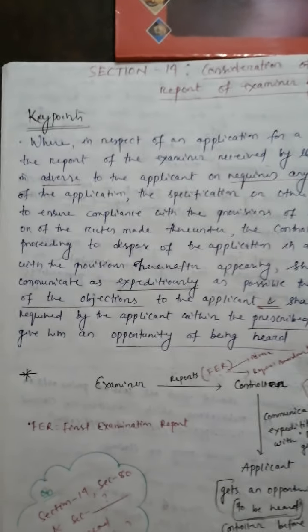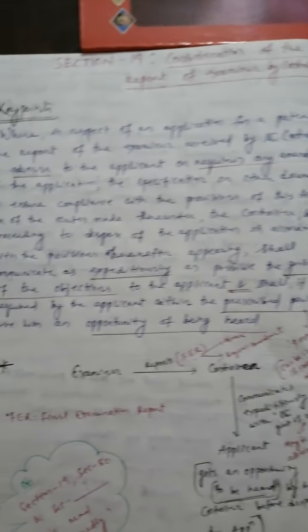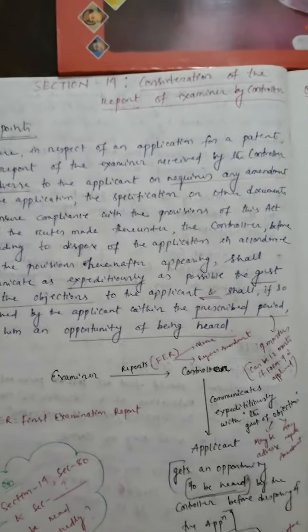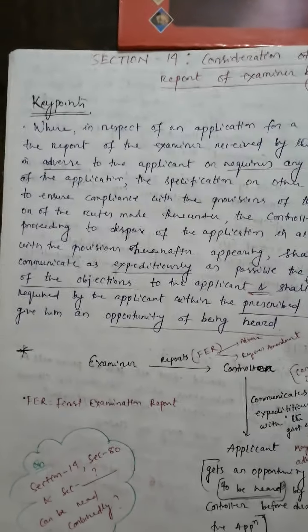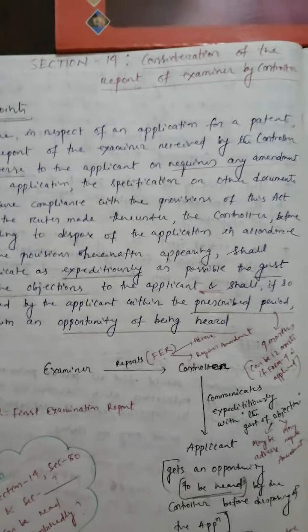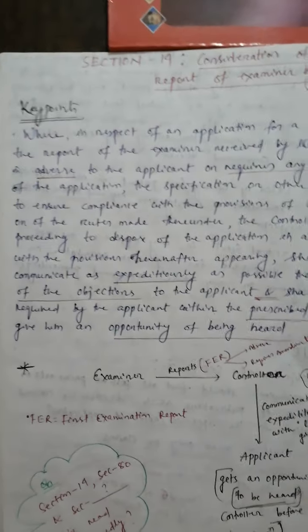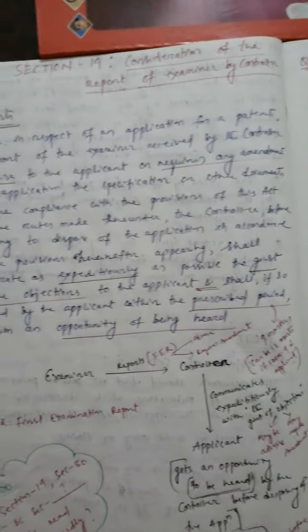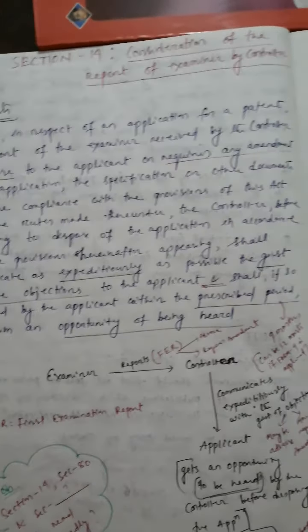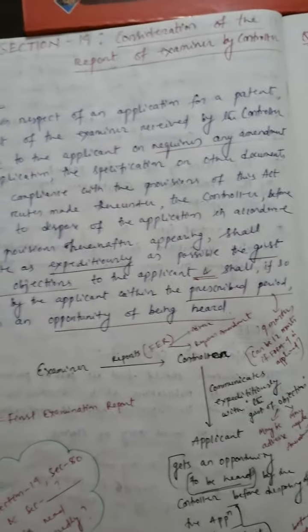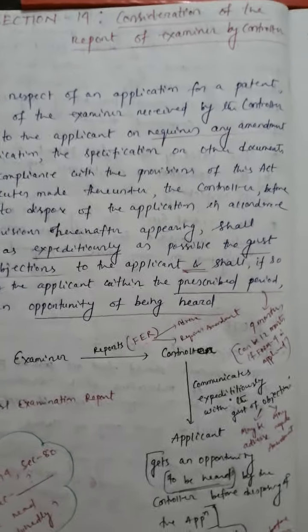The controller, before proceeding to dispose of the application in accordance with the provisions hereinafter appearing, shall communicate as expeditiously as possible the gist of the objections to the applicant and shall, if so required by the applicant within the prescribed period, give him an opportunity of being heard.